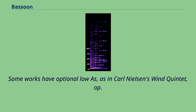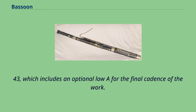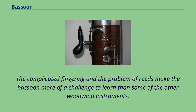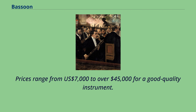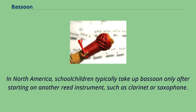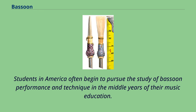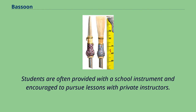The complicated fingering and the problem of reeds make the bassoon more of a challenge to learn than some of the other woodwind instruments. Cost is another big factor in a person's decision to pursue the bassoon; prices range from US$7,000 to over US$45,000 for a good quality instrument. In North America, school children typically take up bassoon only after starting on another reed instrument, such as clarinet or saxophone. Students are often provided with a school instrument and encouraged to pursue lessons with private instructors. Students typically receive instruction in proper posture, hand position, embouchure, and tone production.